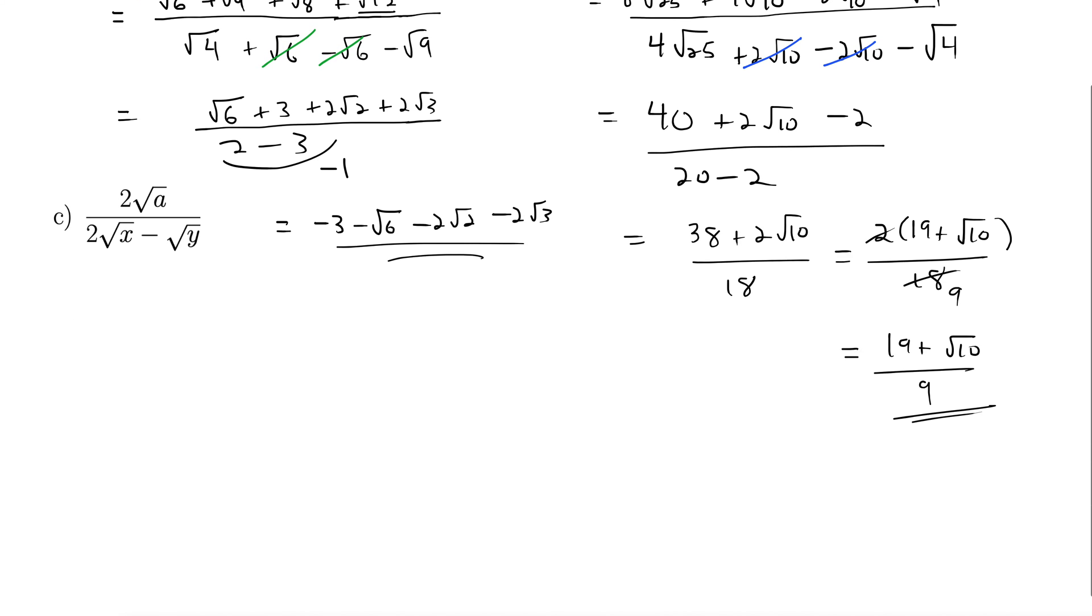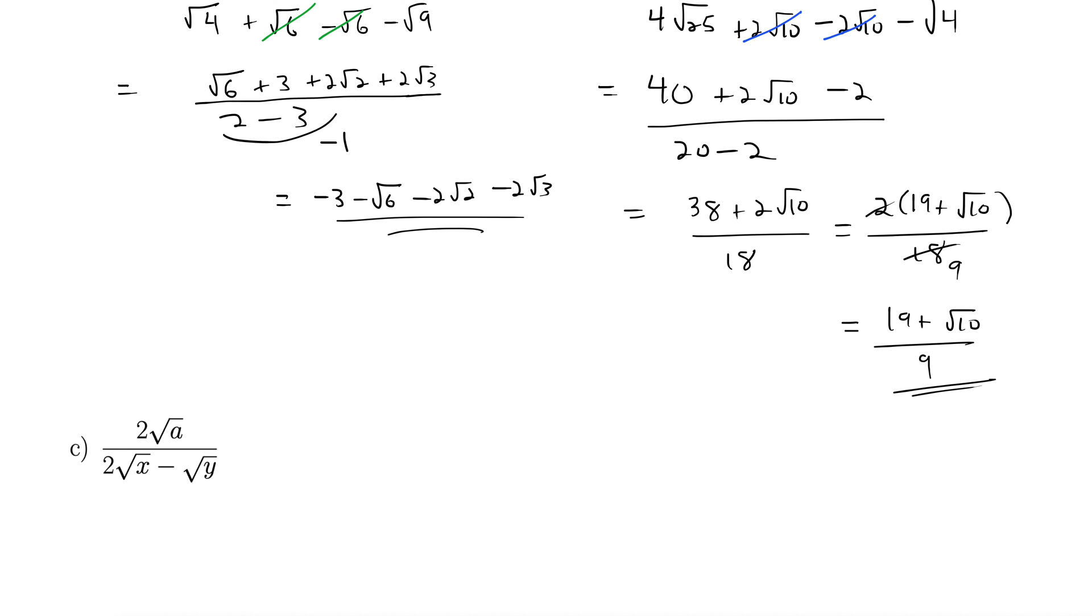Let's scroll down a little bit for part C. For part c, we have 2 rad a divided by 2 rad x minus rad y. Same trick. It's that conjugate trick. It works for these kinds of exercises. So we multiply by the conjugate of the denominator, 2 rad x plus rad y, divided by the same conjugate again, 2 rad x plus rad y. Note that these are the same. These are exact replicas of each other on the top and the bottom here. Nothing changes and it's all based on the bottom. We don't even care what the top is when we make this multiplier term here.